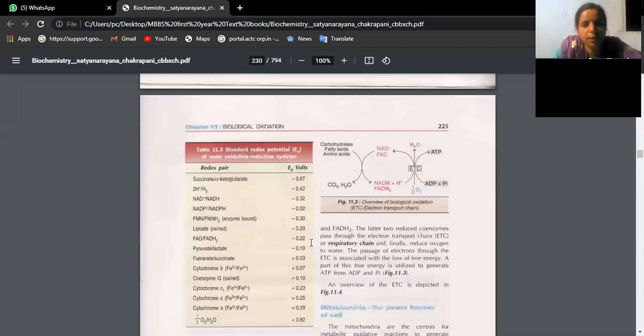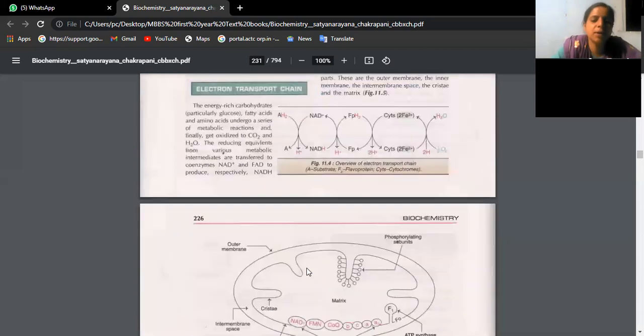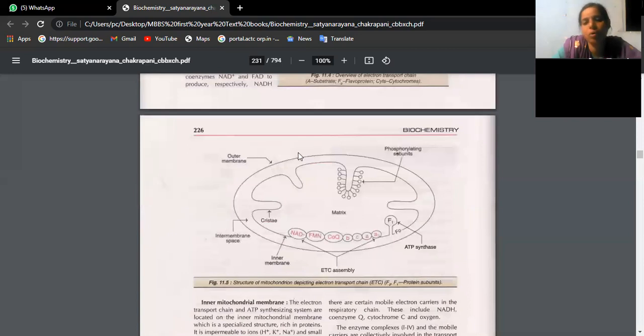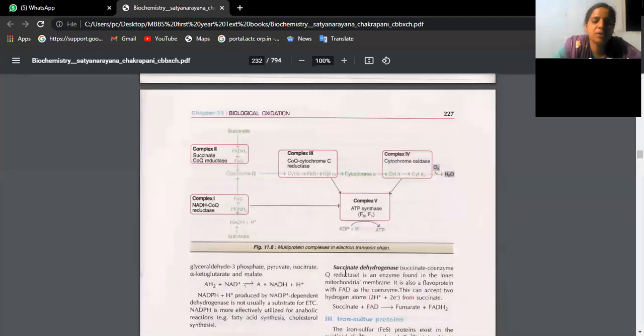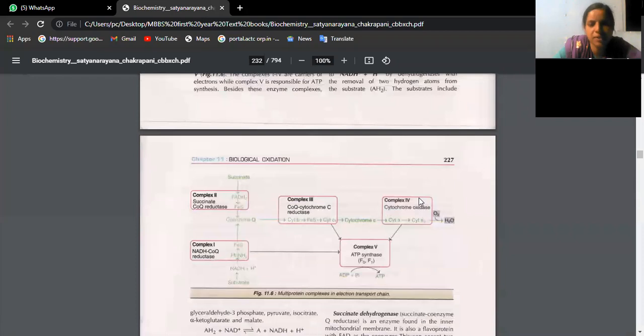Now see here, for electron transport chain, I want you to draw this picture of mitochondria. This is outer membrane, inner membrane. These are the coenzymes which are present in order, NAD, FMN. This sequence you should have. And see the oxidation reduction is occurring in this cycle. I said like we have five multi-enzyme complexes. Complex 1, 2, 3, 4, 5.